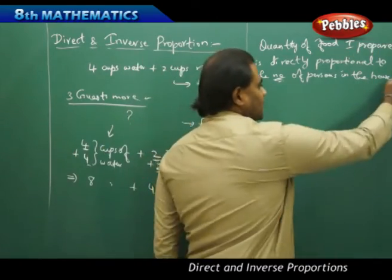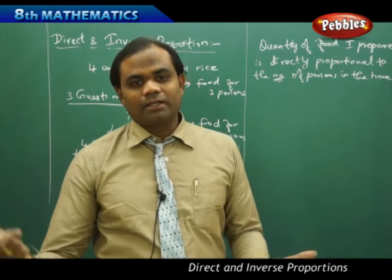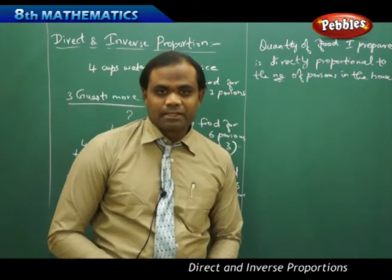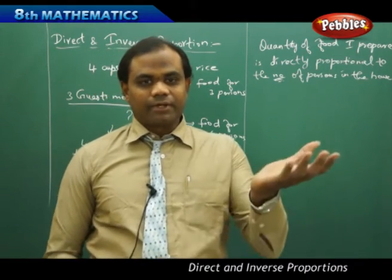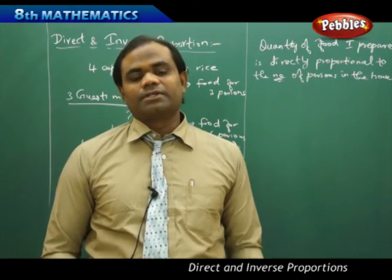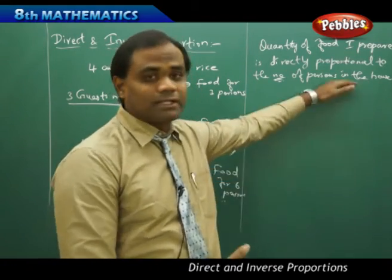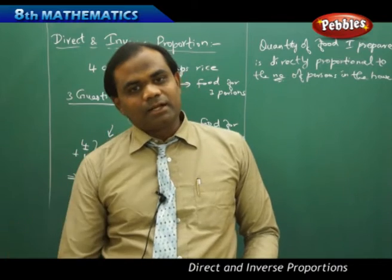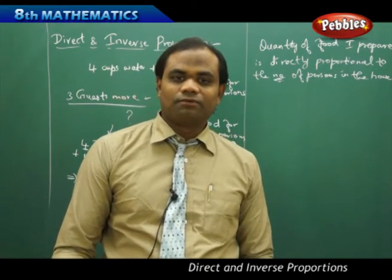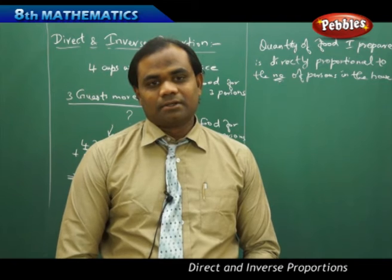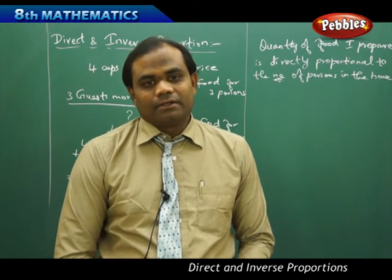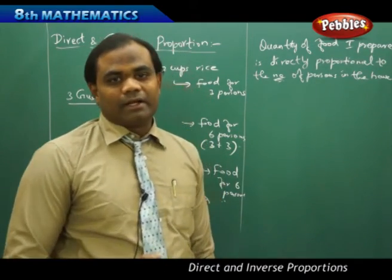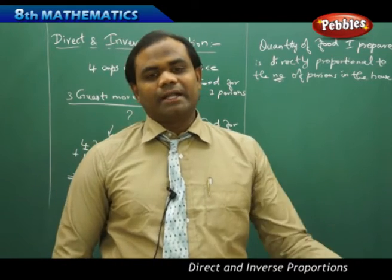This is how I directly relate the quantity of food and the number of persons. Mathematically, direct proportion means: when one quantity is increased, the other quantity is increased; when one quantity is decreased, the other quantity is decreased. In this example, more persons means more food to prepare, and fewer persons means less food. Now let's take a real life example where we can differentiate between direct and inverse proportion.